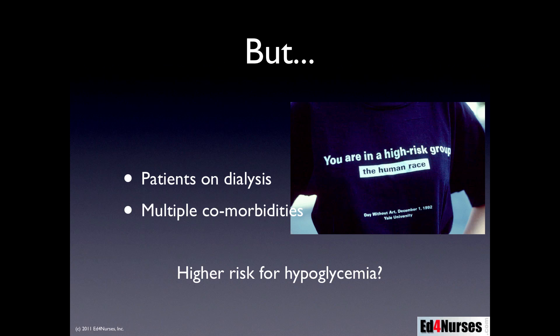Having a low blood glucose level when the patient becomes dialyzed and has electrolyte disturbances may cause more stress to the body. Patients with multiple comorbidities might need a higher blood glucose level, especially at certain times of day or night. We don't really know exactly what the mechanism is, but these patients are also at a higher risk for hypoglycemia — and maintaining a lower hemoglobin A1C level may actually lead to more problems.